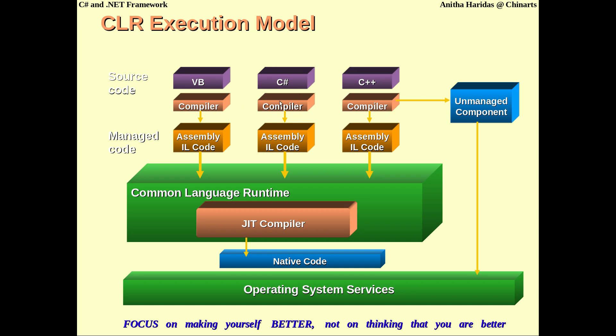These source codes will be compiled by a .NET compliant compiler, which will generate an object code — the intermediate language code, or Microsoft Intermediate Language code — which is nothing but the assembly. The assembly is then given to the Common Language Runtime for execution.